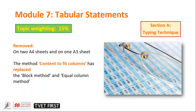In Module 7, what has been removed in our tabular statement is the two sheets of A4 paper. Gone are the days when we used to have to align A4 to another A4 so that we would have an A3 sheet of paper — I still remember doing this on a typewriter. The method to fit columns has been replaced and the block method and equal column method have been brought in.